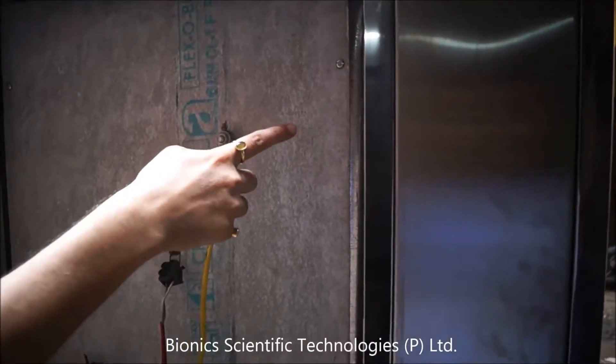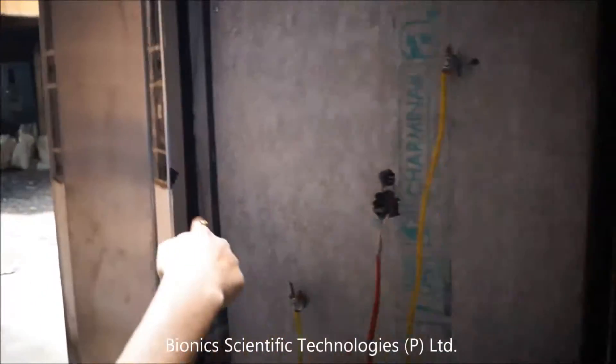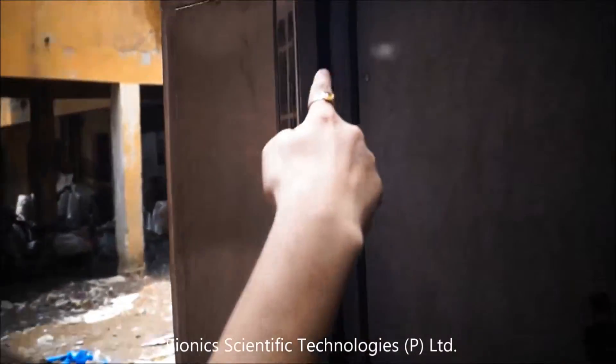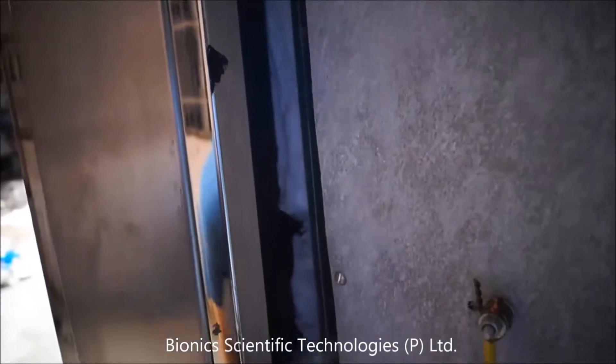The white part that you are seeing here is insulation. This white part is insulation. This is the rear part of secondary chamber.